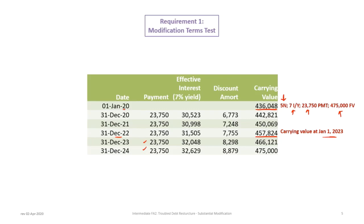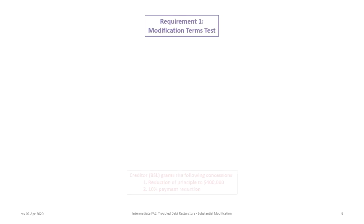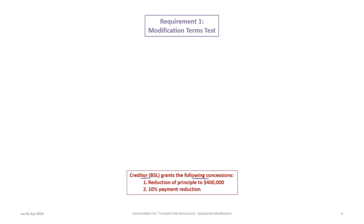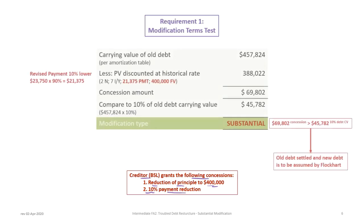We need to remember the concessions granted by the creditor. The first concession is a reduction of principal to $400,000 from $475,000 — a different scenario from Tutorial 6B. In the previous tutorial it was a reduction to $450,000 with an extension of one year; this time it's a reduction to $400,000 and a 10% payment reduction, but no extension in terms. We follow the same process to determine the type of modification.